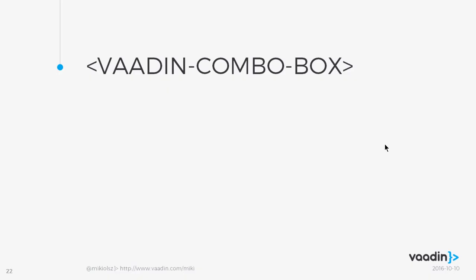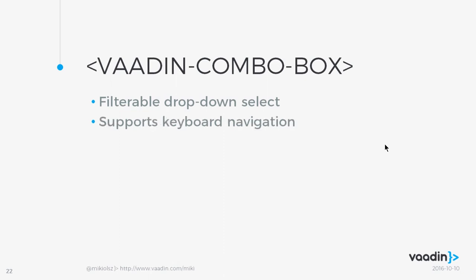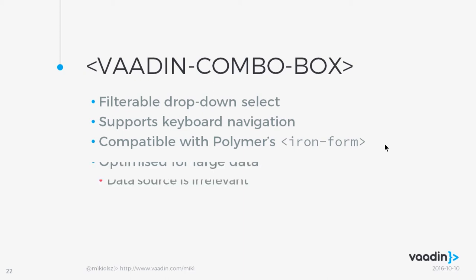The second element is Vaadin ComboBox — a filterable dropdown select. It supports keyboard navigation and is compatible with iron form, so you can use Polymer forms and stuff Vaadin ComboBox into it. It's optimized for large data and the data source is completely irrelevant.